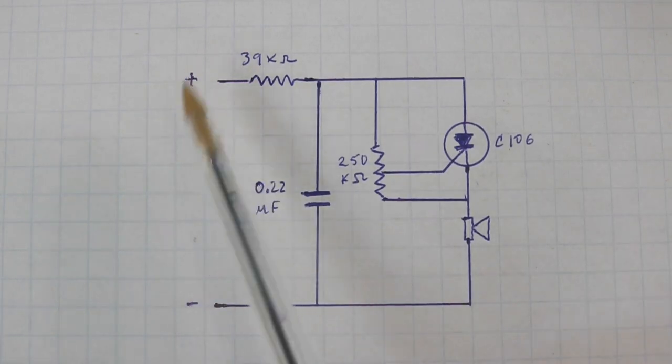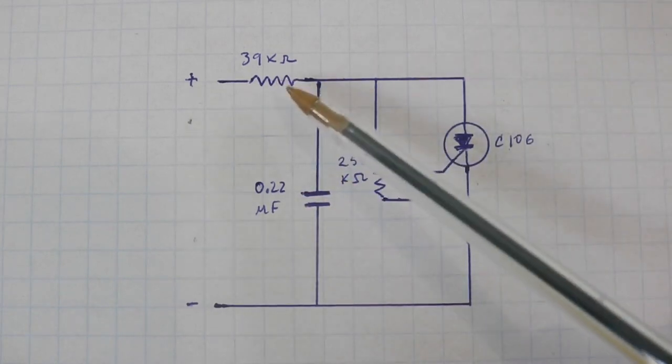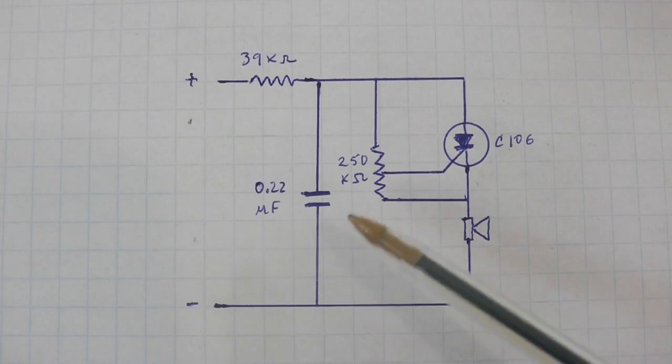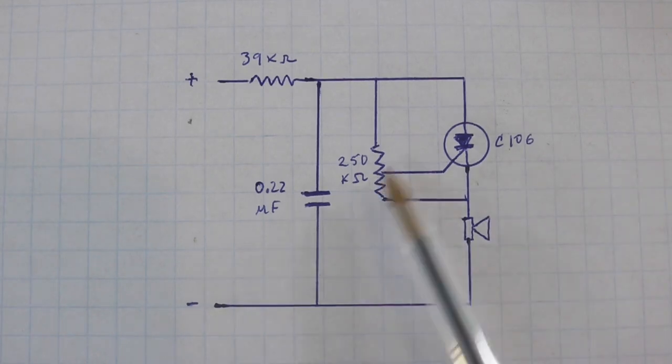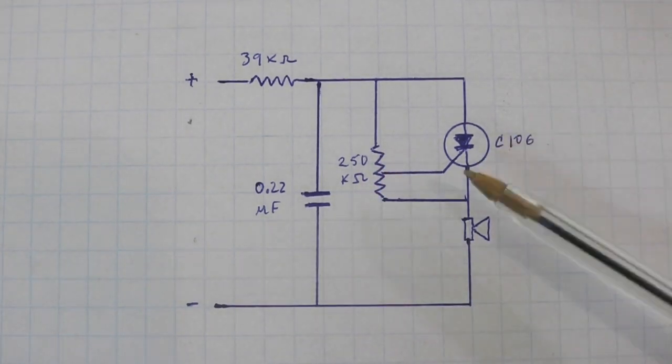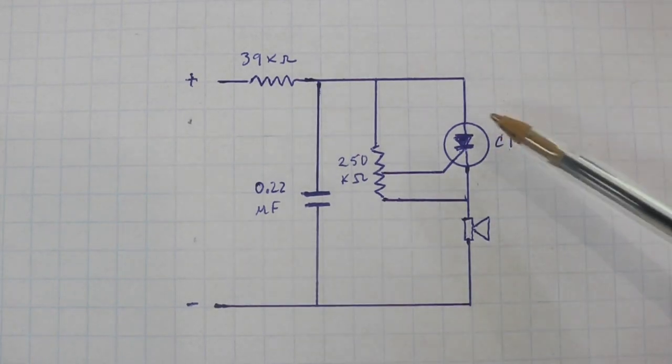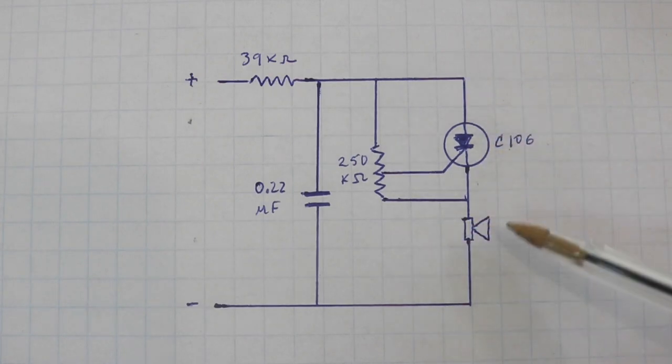When you apply a voltage here, around 10 volts, this capacitor starts to charge via this resistor and then a voltage goes to the gate of the tyristor. That voltage is controlled with this potentiometer. When the voltage reaches its minimum threshold value, the tyristor closes and the current can go through the speaker.